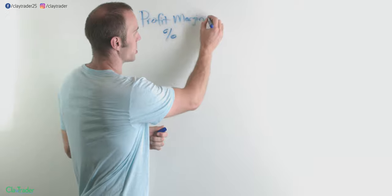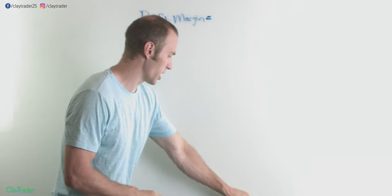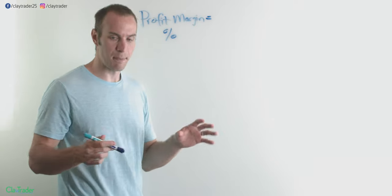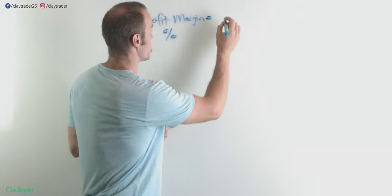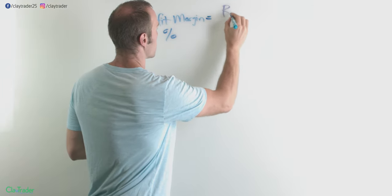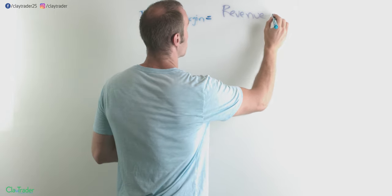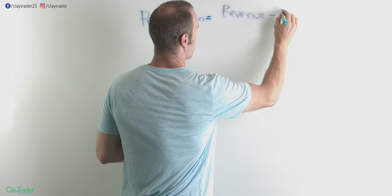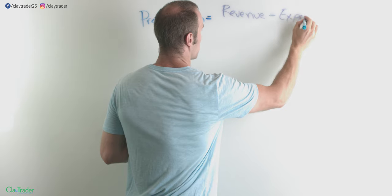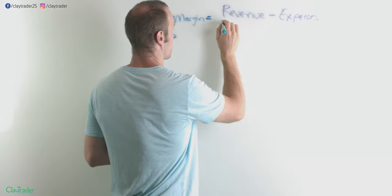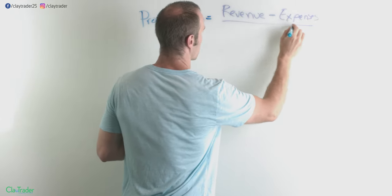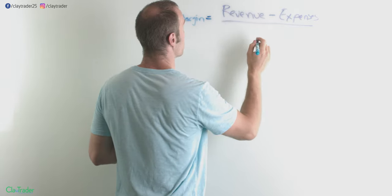So how is a profit margin actually calculated? Well you have a very straightforward calculation here and it is revenue minus expenses. And then you're gonna divide all that by the revenue.